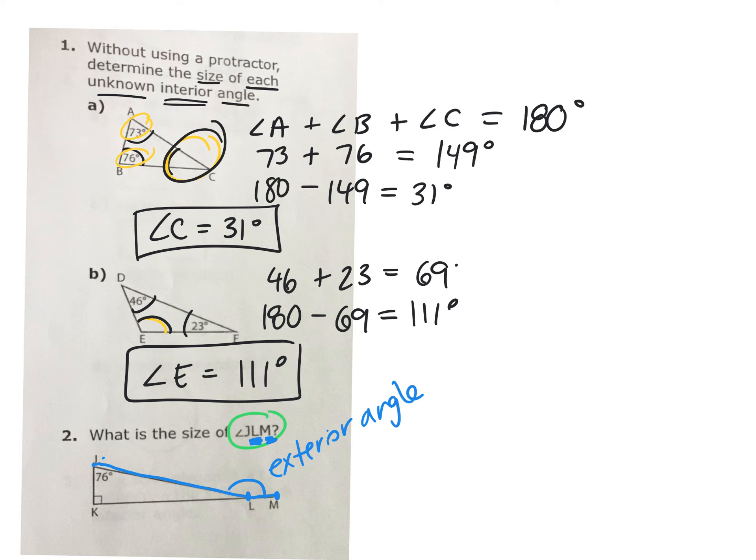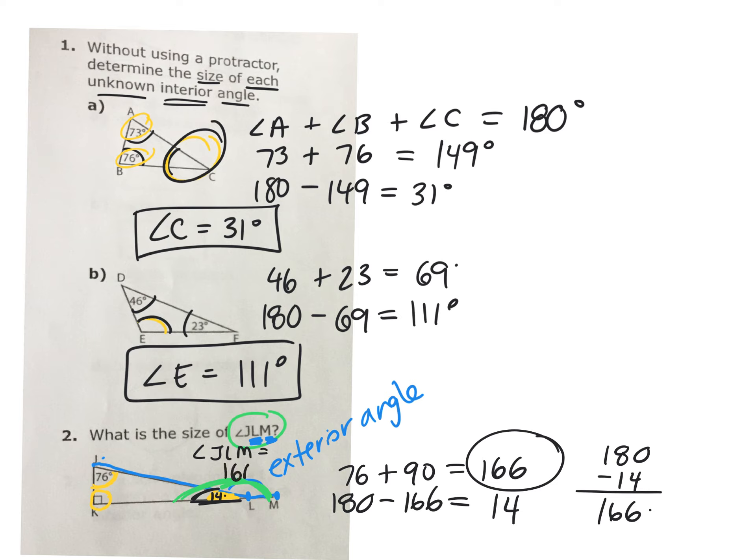We know that we have an interior angle here of 76. Do you know what this angle is? Angle K? 90. Can you figure out this interior angle too? So we did 76 plus 90 equals 166. That gives us the sum of the two angles, but to find the third angle, what do I have to do? So 180 subtract 166, which gives us 14 degrees. So this angle inside here is 14, but we need to know this angle outside the triangle. Yes, you're right. The two of them on a straight line add up to 180. So we can do 180 minus 14, which gives us 166. So the exterior angle J, L, M equals 166 degrees.